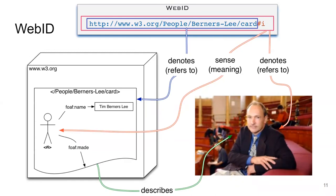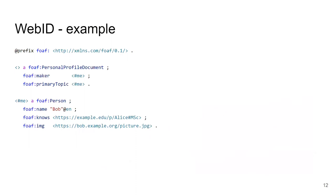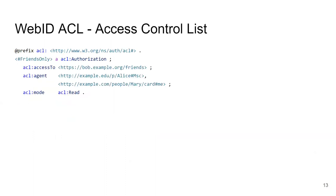A personal profile document links to who created it and, using foaf:primaryTopic, links to the person the profile is about — a person with a name, who maybe knows someone, has an image, and other data that might be in a personal profile. It's a simple thing: essentially a full profile with a URL you use to identify yourself in the Solid ecosystem.